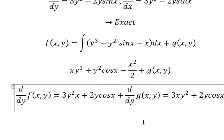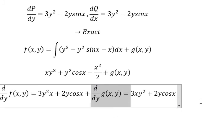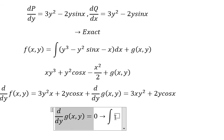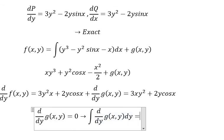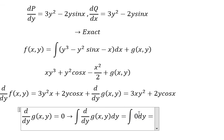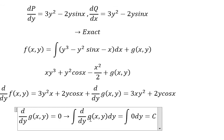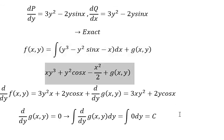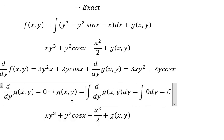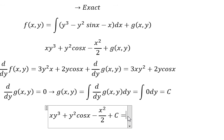Because we have dy here, we simplify both sides and get zero. Now we integrate both sides. The integration of zero gives us a constant. We know that g(y) from the integration equals a constant, so we replace g(y) with c.